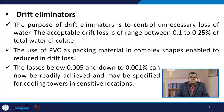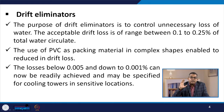Let us start with the drift eliminators. The purpose of a drift eliminator is to control unnecessary loss of water, because water is a key component in the cooling tower. The role of the drift eliminator is to avoid such loss during operation. The acceptable drift loss ranges between 0.1 to 0.25% of total water circulated. The use of PVC as packing material in complex shapes has enabled drift losses below 0.005 down to 0.001% to be readily achieved, even for cooling towers in sensitive locations.